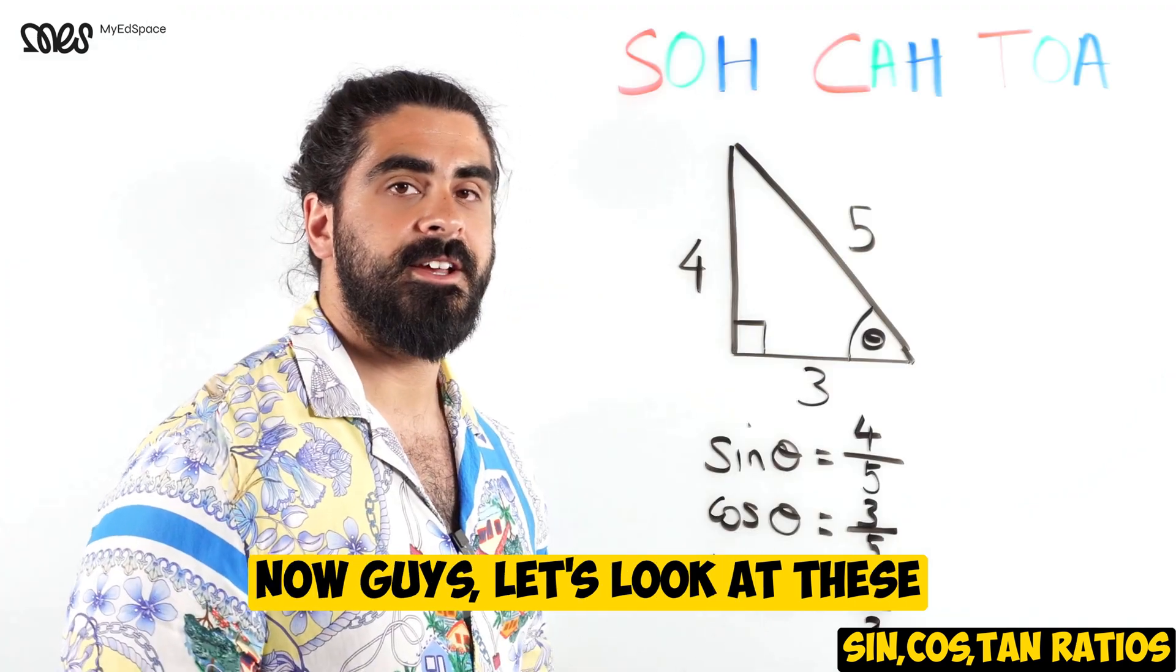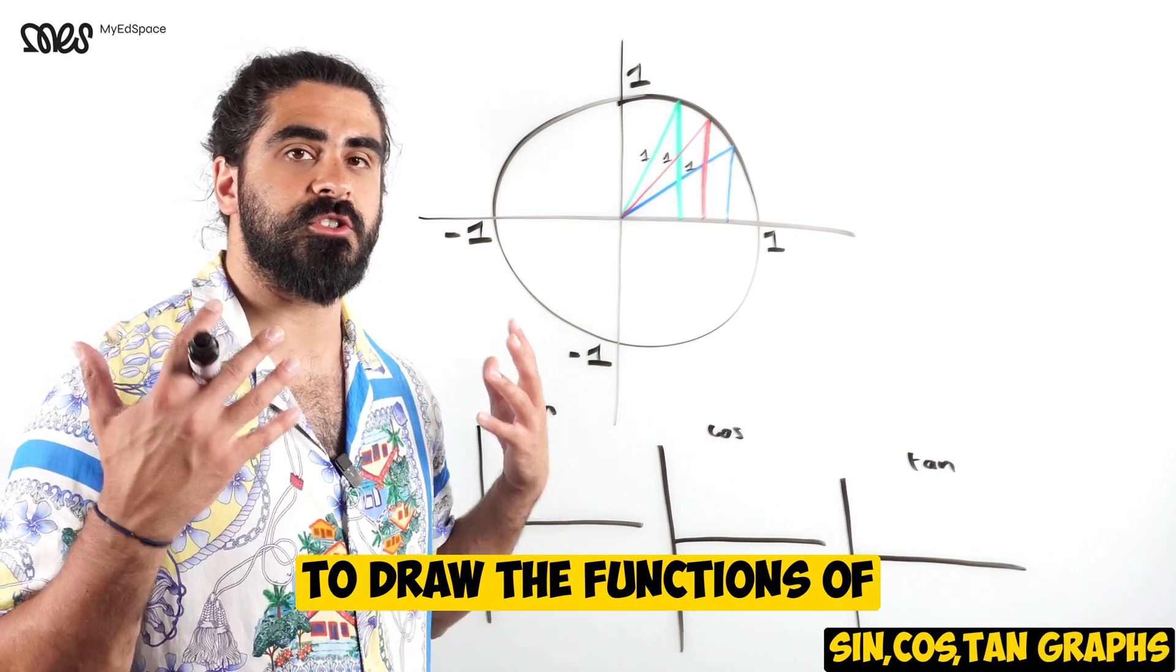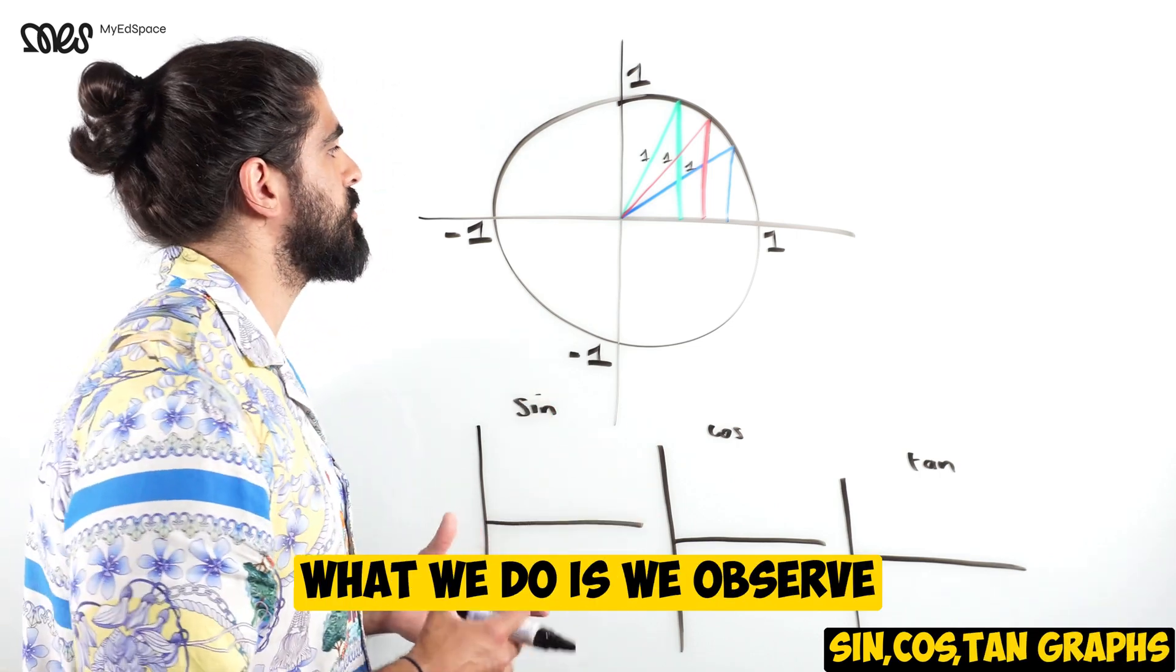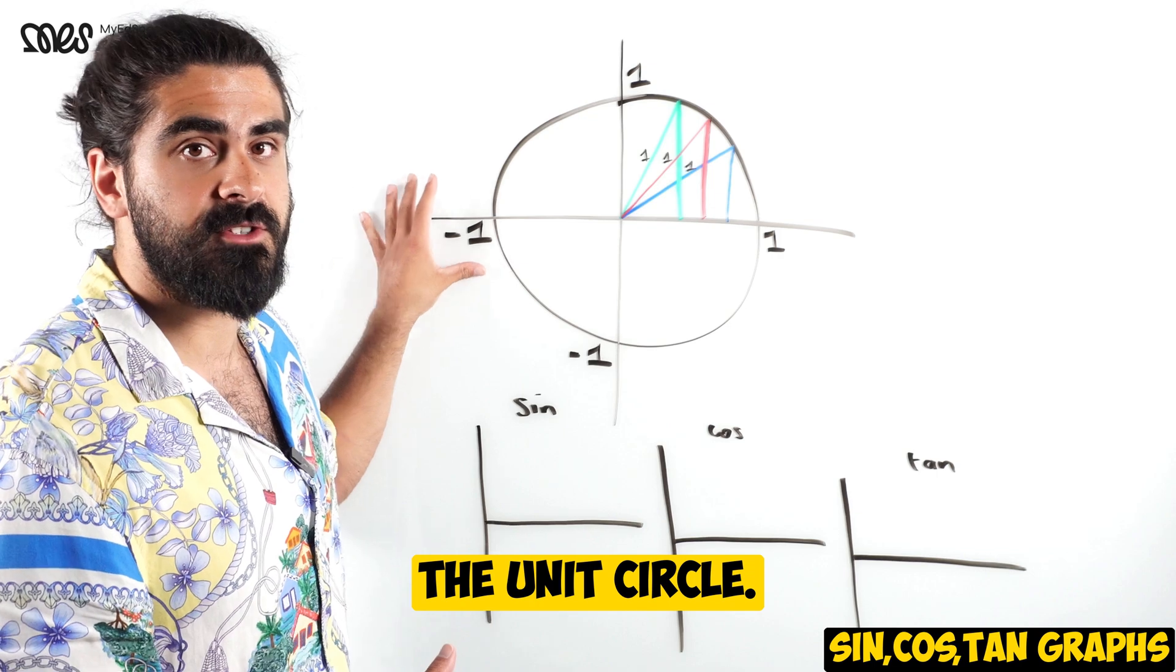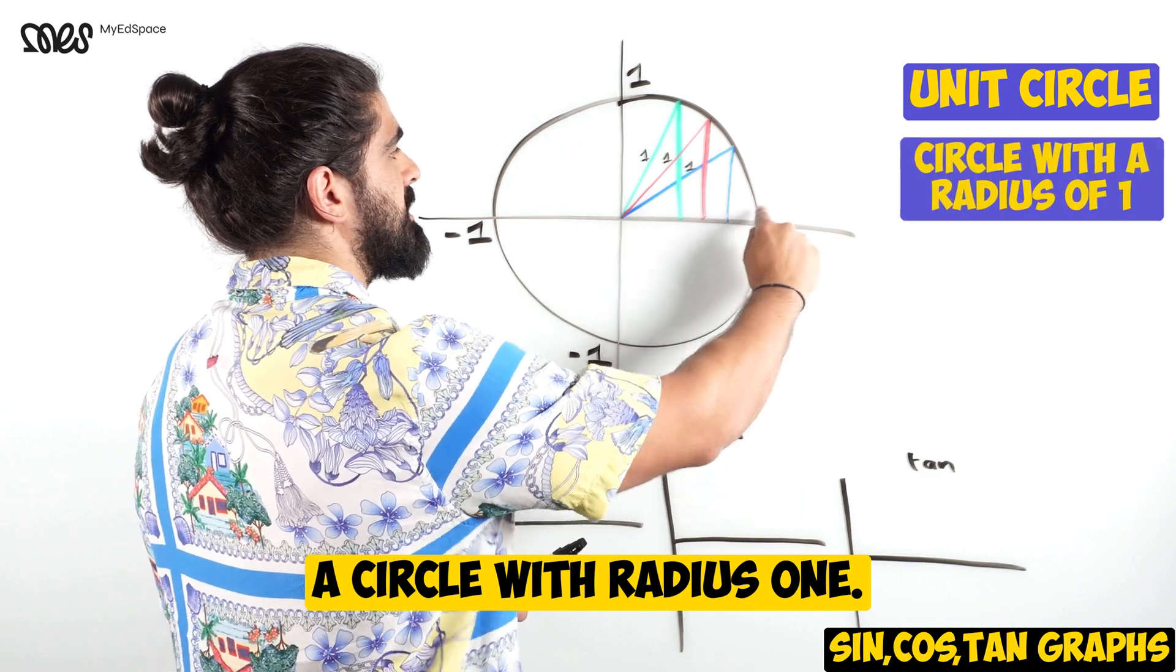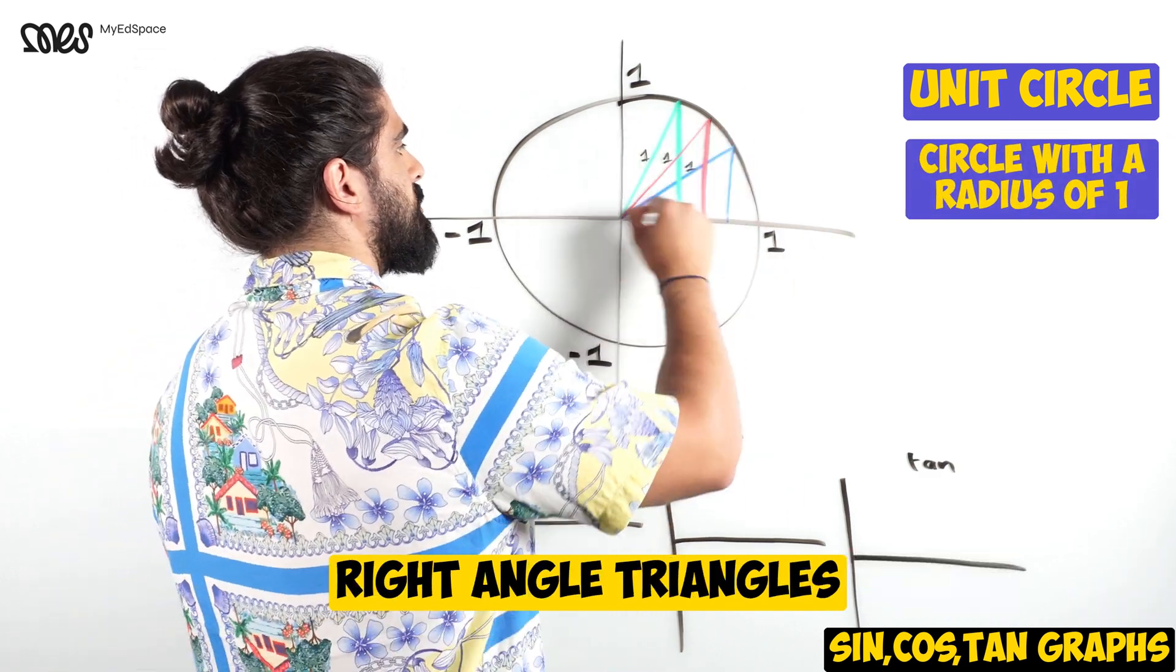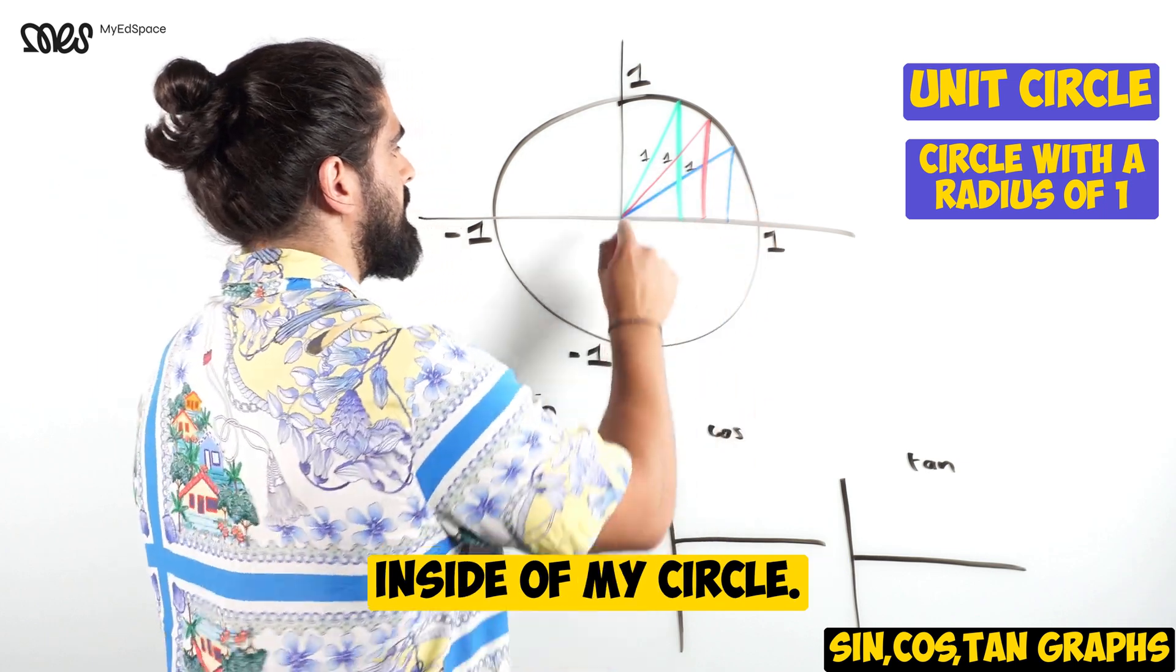Now let's look at these graphs of sine, cos and tan. Where do they come from? To draw the functions of sine, cos and tan, we observe the unit circle - a circle with radius one. I've drawn some right-angled triangles inside of my circle. The hypotenuse is one for all of my right-angled triangles.